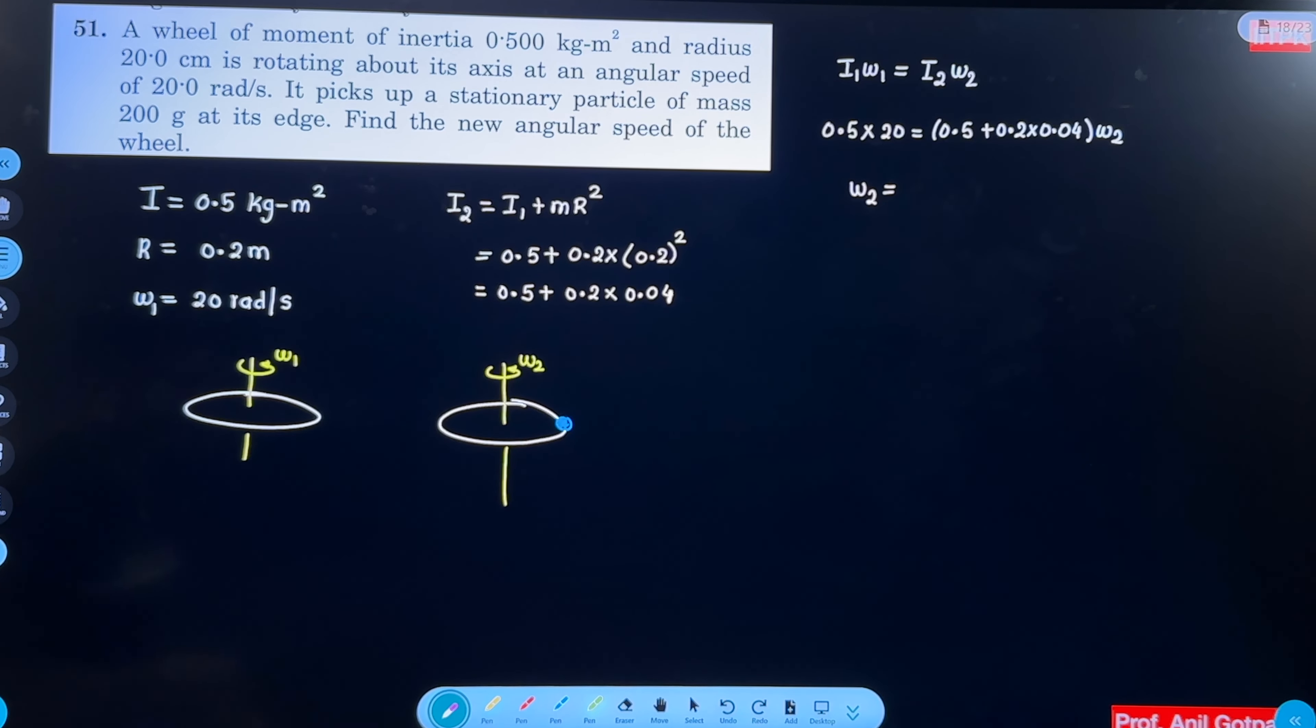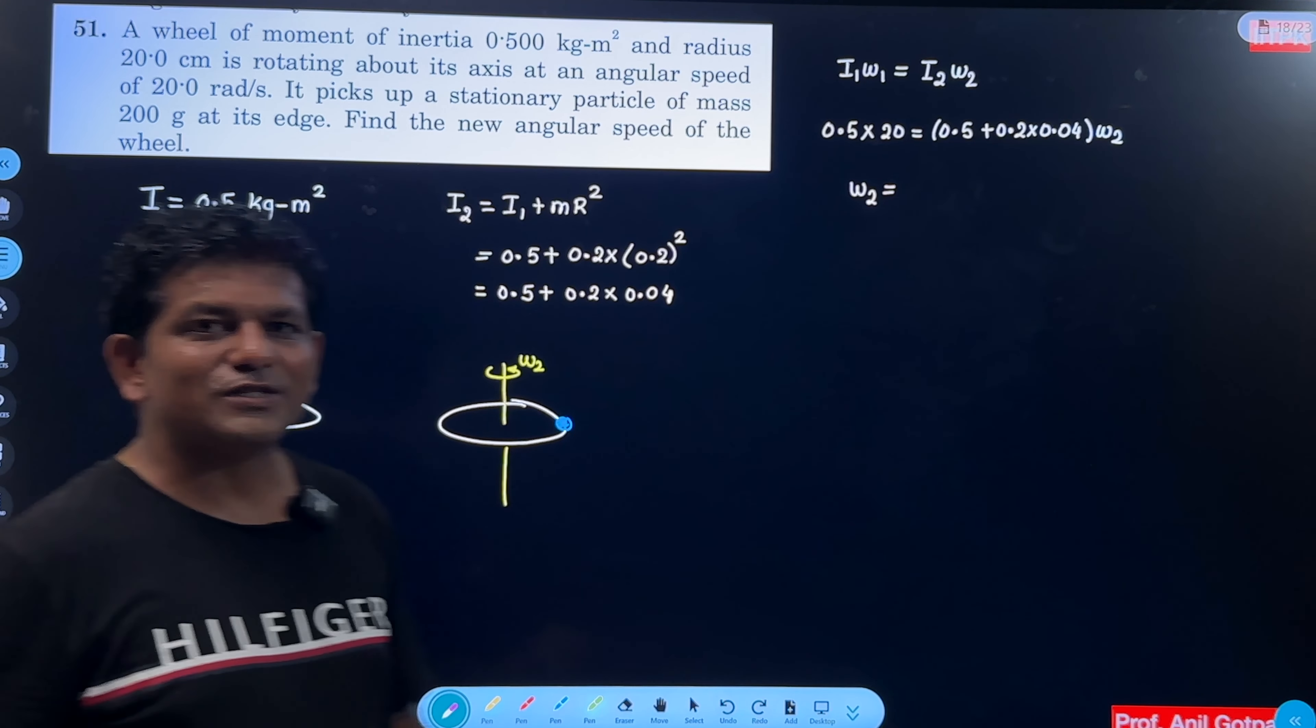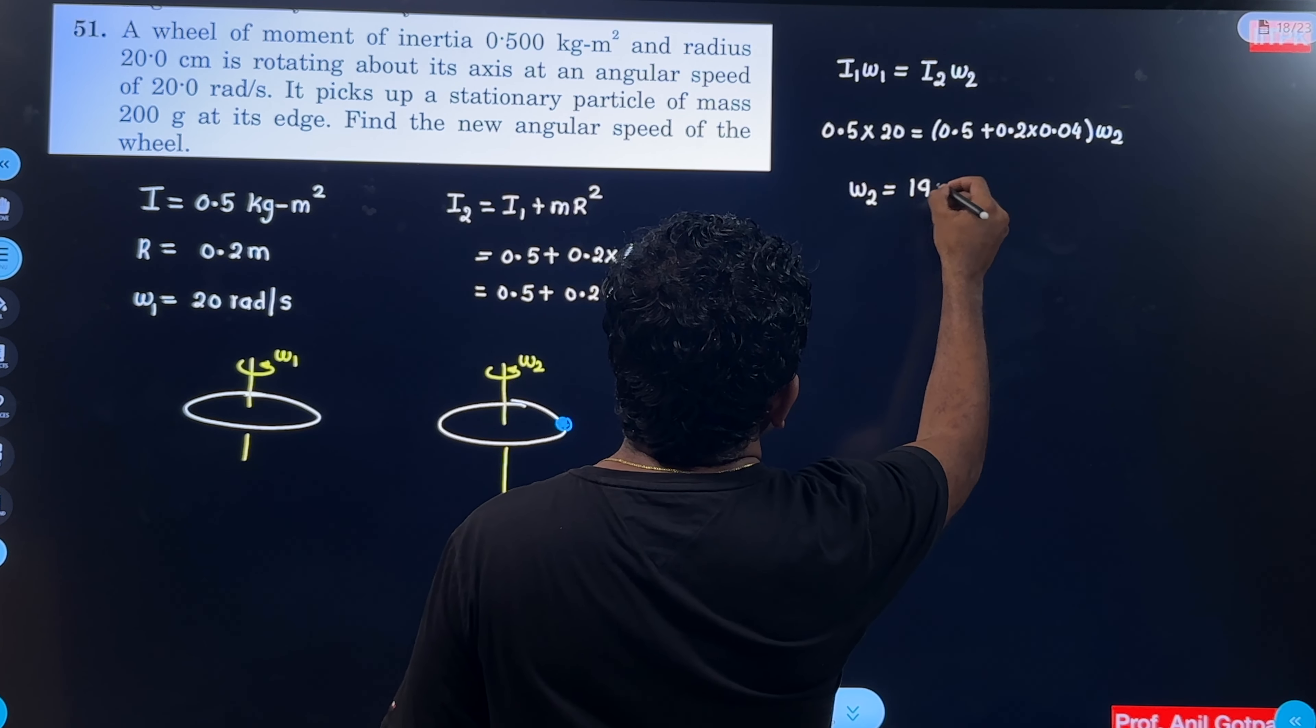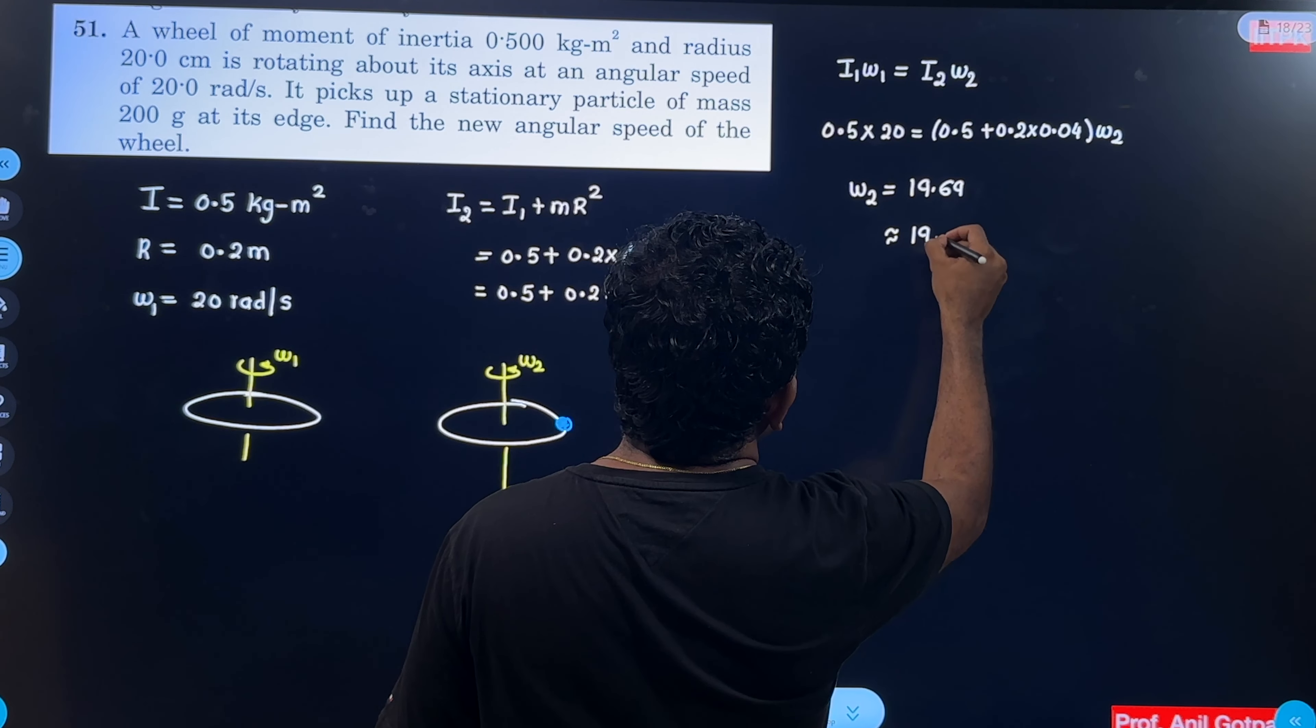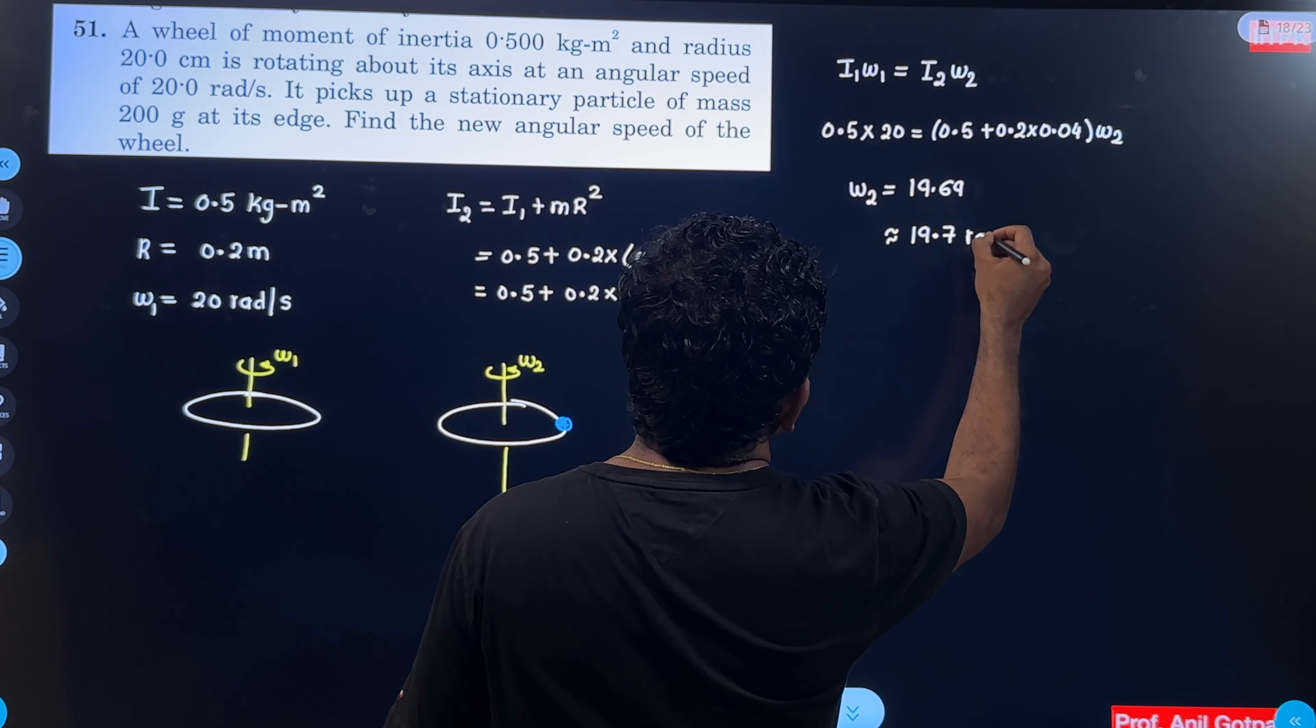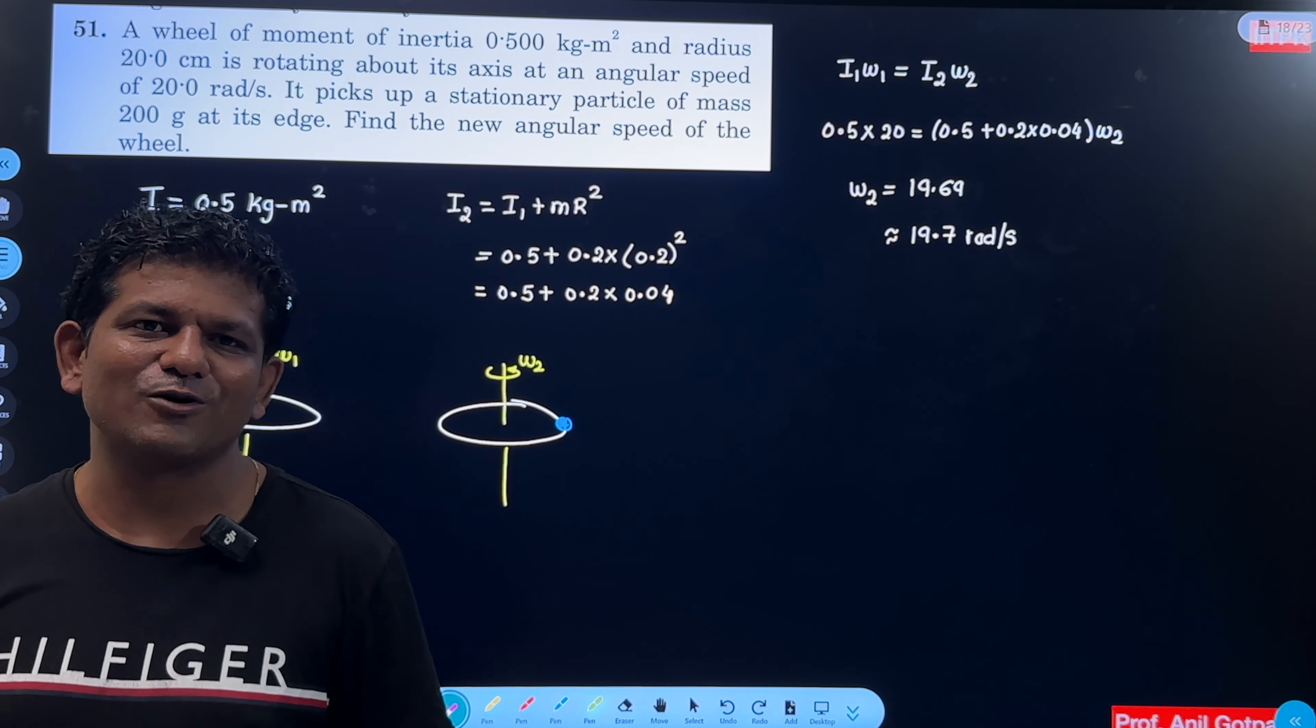Check how much calculation will be. So this calculation will be 19.69, approximately 19.7 radian per second. Let's see. If you have any doubts, please ask me in the comment box.